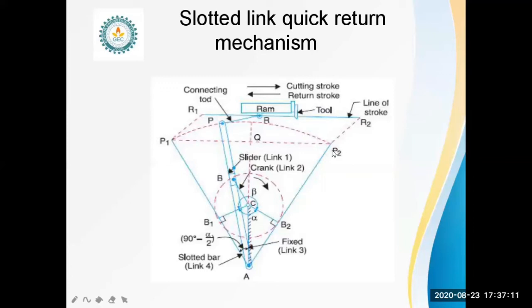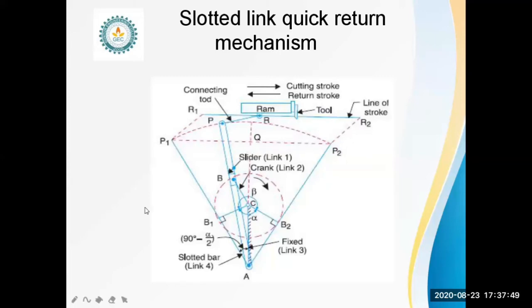The length of stroke R1R2 is equal to the time of cutting stroke divided by the time of return stroke. In the quick return motion, the time of cutting stroke is noted as beta and the time of return stroke is noted as alpha. The total length of the stroke is equal to P1P2, and P1P2 is equal to R1R2, which equals 2 times (AP × CB) divided by AC. This is the slotted lever quick return mechanism in shaping machines.